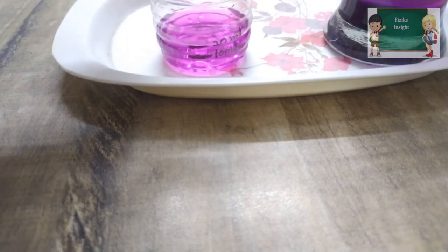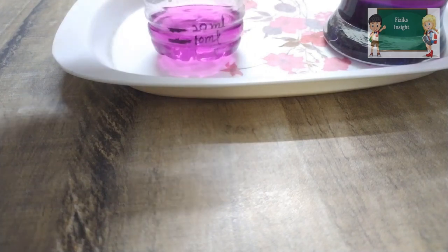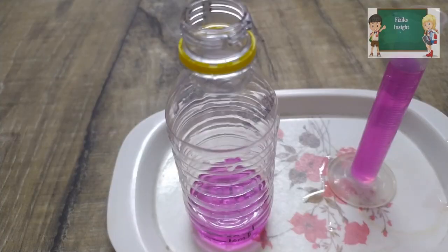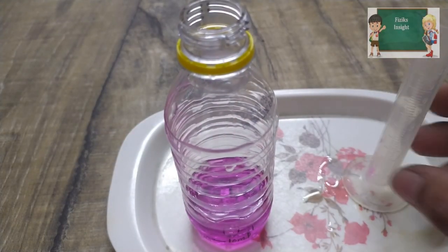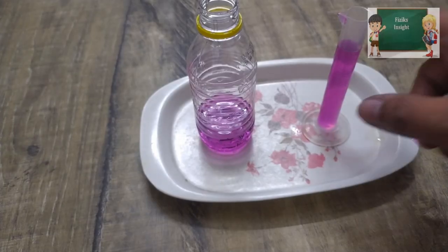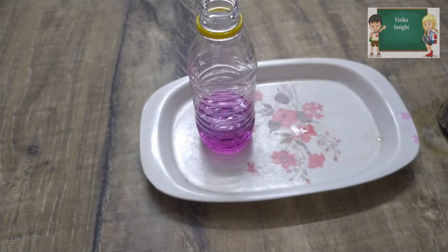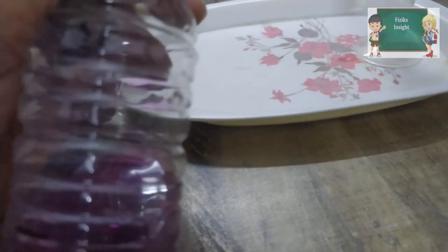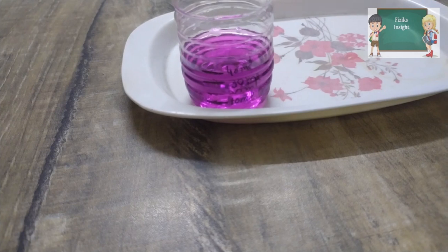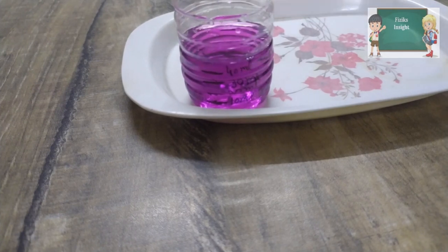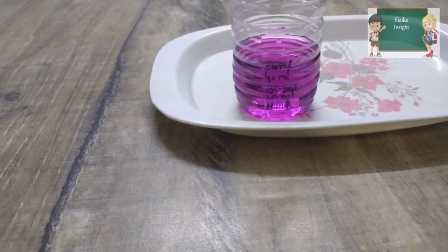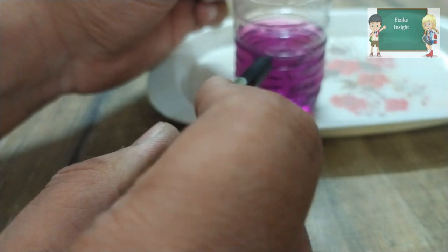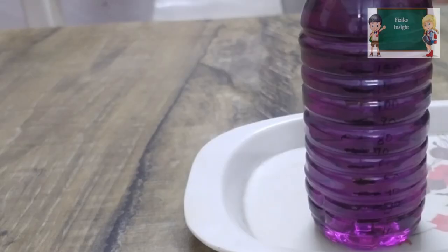Now repeat the same process for the desired capacity. We have done this 16 times to get a 160 ml cylinder. So do this for a longer period.